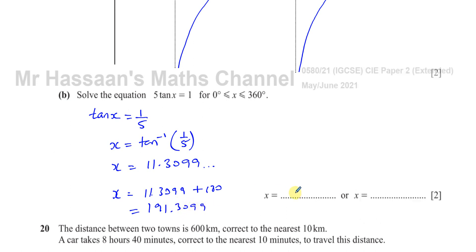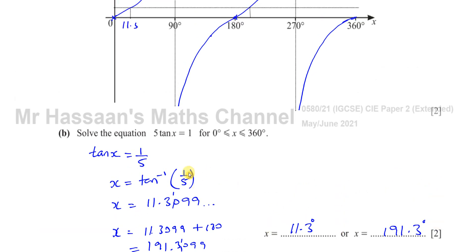So our final answers, angles, as it's mentioned in the front of the paper, should be given to one decimal place. If the degree of accuracy is not specified and the answer is not exact, then you should give your answers to three significant figures in case of angles, one decimal place. So we're going to write this as 11.3 and 191.3. That's how you round that to one decimal place for both of them. And there are your answers for part B of this question.